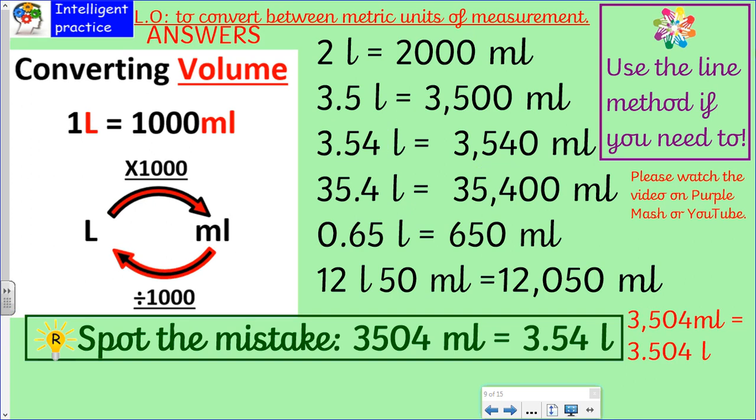All right, there we go. So hopefully you got that 2,000 without too much trouble. And then this one down here I just said to be careful of. So you've got 12 litres, that's 12,000, and fifty.